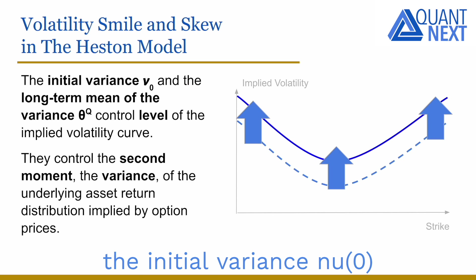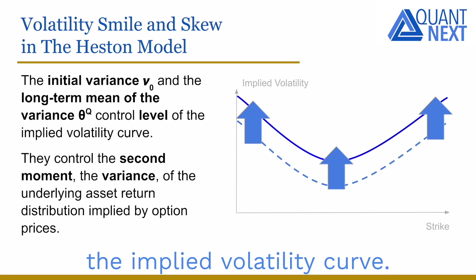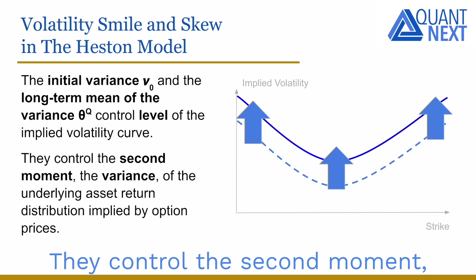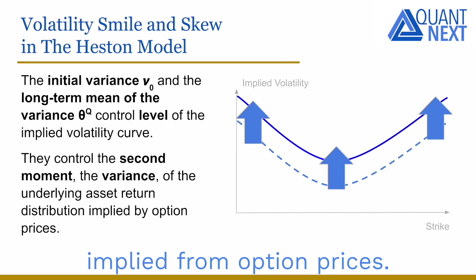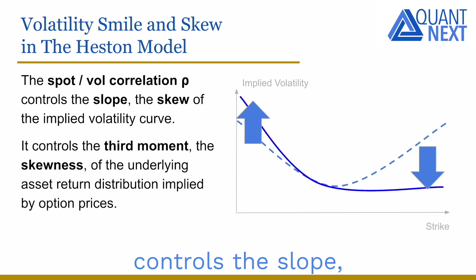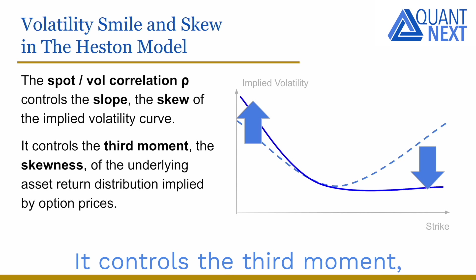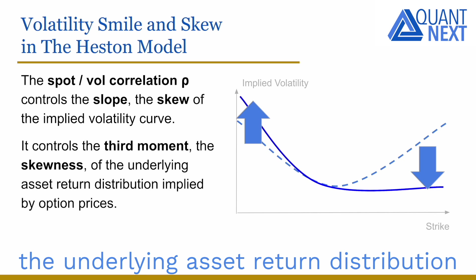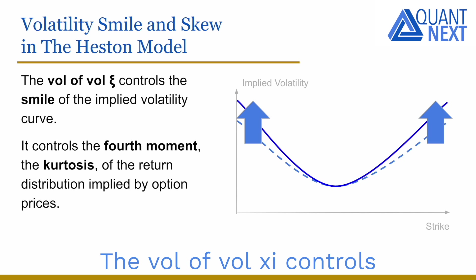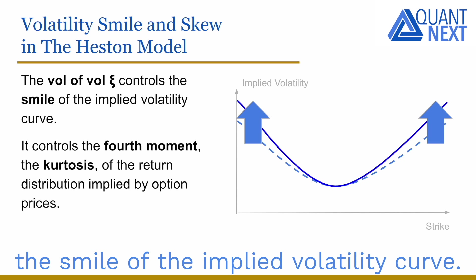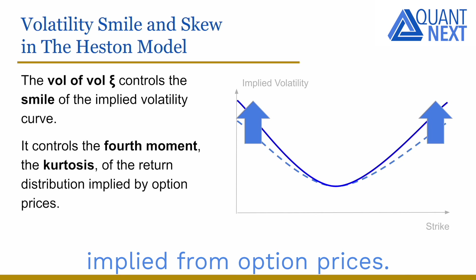In summary: the initial variance Nu0 and the long-term mean of the variance Theta_Q control the level of the implied volatility curve — they control the second moment (variance) of the return distribution implied from option prices. The spot-vol correlation Rho controls the slope and skew of the implied volatility curve — it controls the third moment (skewness) of the return distribution. The vol-of-vol Xi controls the smile of the implied volatility curve — it controls the fourth moment (kurtosis) of the return distribution implied from option prices.